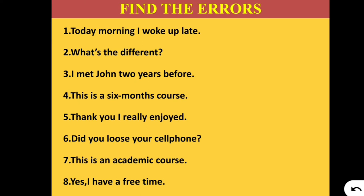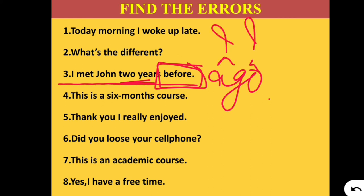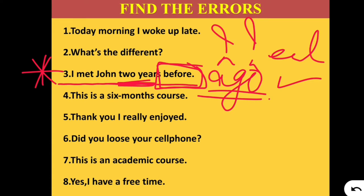Number 3: 'I met John two years before.' The error is the last word. When we say 'I met John two years,' we have to use 'ago' — 'I met John two years ago.' If you use 'before,' it needs to be followed by something, like 'before eating,' 'before meeting,' 'before shopping,' etc. But when we use 'two years,' we must say 'I met John two years ago.' This is a very common mistake which we make.